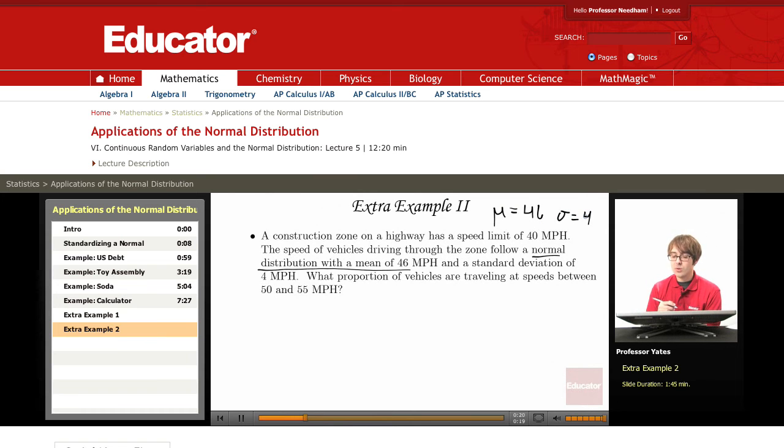What proportion of vehicles are traveling at speeds between 50 and 55 miles per hour? So we're trying to find the probability that my random variable is going to take on a value between 50 and 55.